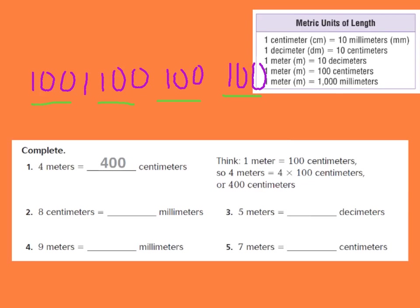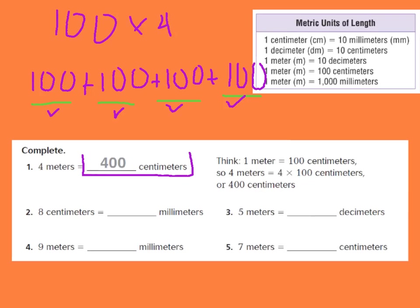We can add these together to get 400 centimeters, or we can say 100 four times — so 100 times four. That's how they got 400 centimeters in four meters.